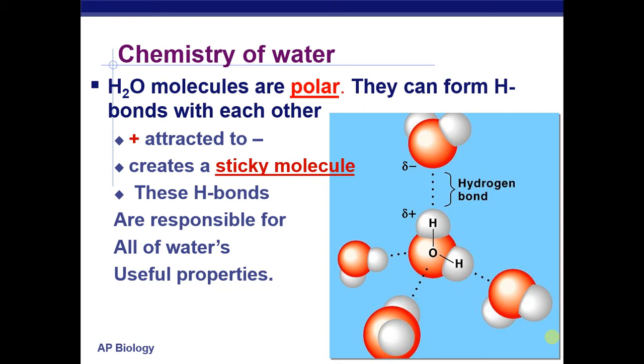So just a throwback to what we ended last time talking about: water molecules are polar, which means they can form hydrogen bonds with each other. Remember, just to review, here is a hydrogen bond—these dotted lines. It occurs between the slightly positive hydrogen atom in one water molecule and the slightly negative oxygen atom in another water molecule.